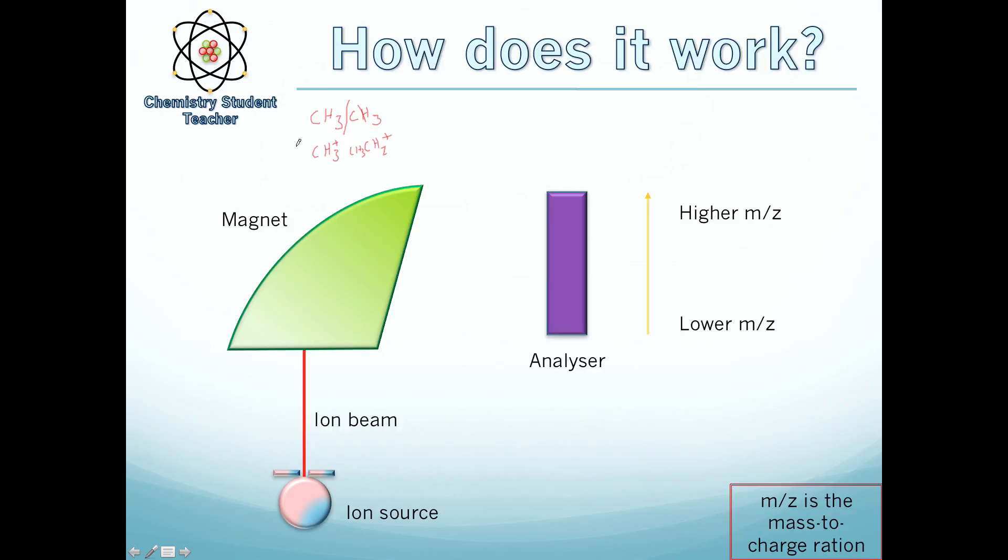Because these ions have a positive charge, the magnet will actually disrupt them. So if we try and force them around, say this magnet is in a tube shape, if we try to force them around this tube shape, the magnet will interact with this positive charge and cause them to bend.